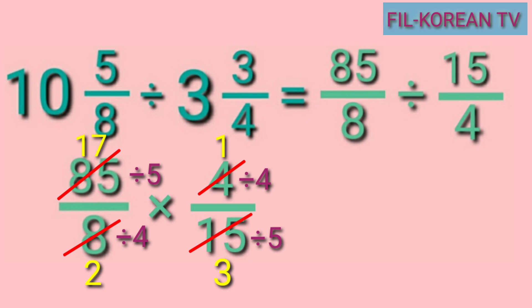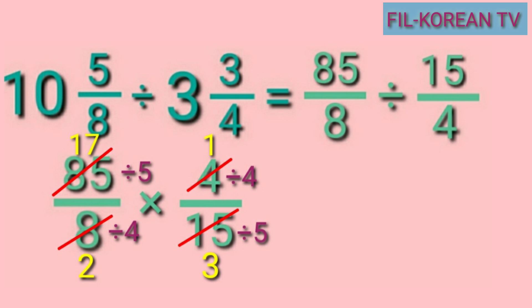Next, let's multiply the new numerators and the new denominators. 17 times 1 equals 17, and 2 times 3 equals 6. The answer is 17 sixths.